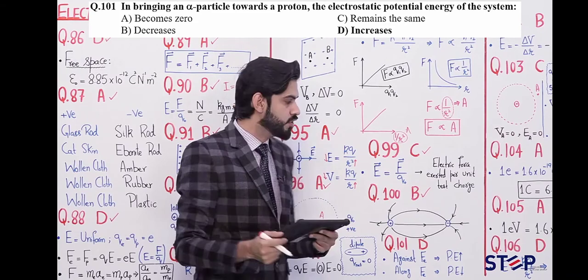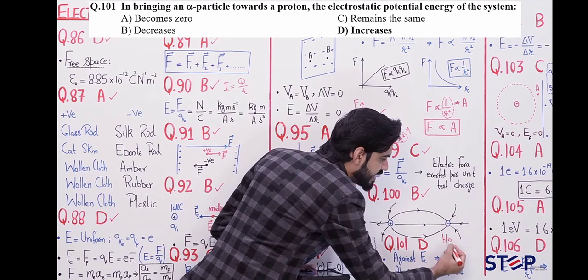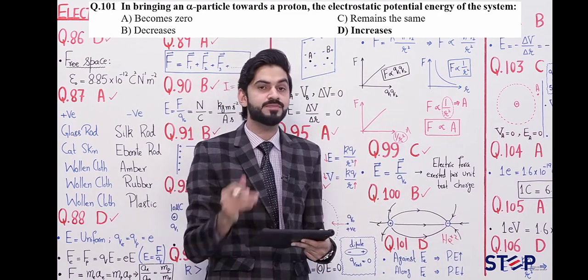An alpha particle has the charge of a helium nucleus. This charge is written as helium nucleus. This means when we talk about alpha particles, what will be called alpha particles?